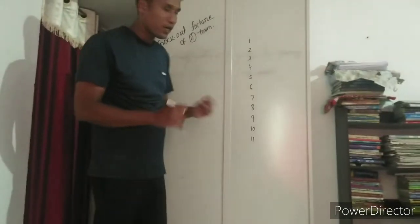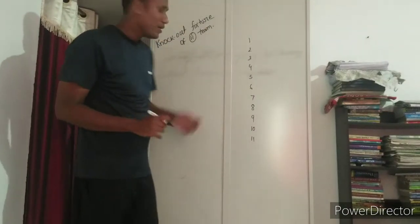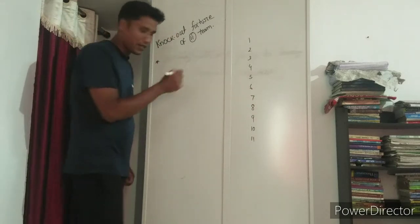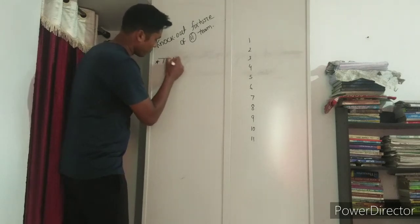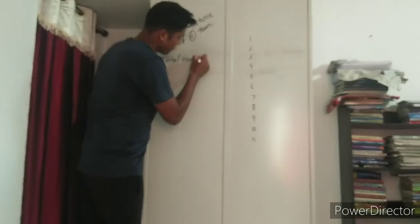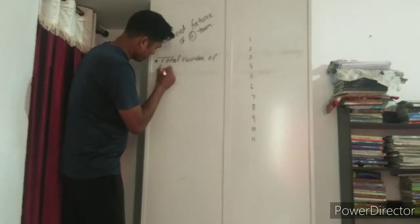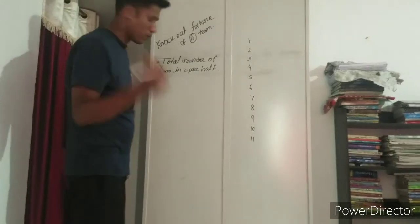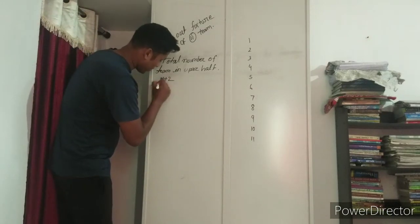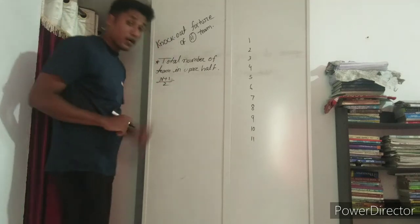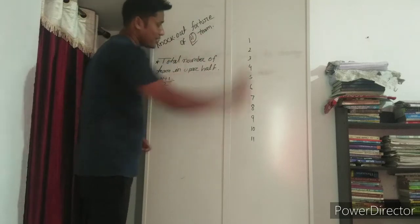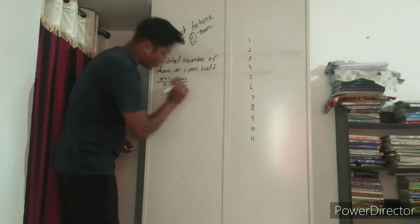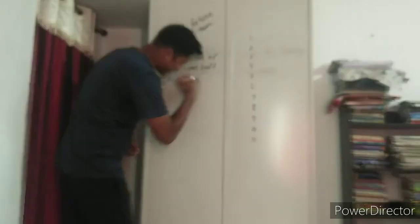Now we are going to divide these teams into two halves — one is the upper half and one is the lower half. There is a simple formula to find the upper half and lower half. For upper half: n plus 1 divided by 2, where n is the number of teams. The number of teams is eleven, so: 11 plus 1 equals 12, divided by 2 equals 6. So the upper half has 6 teams.